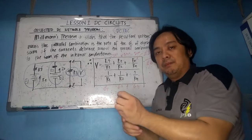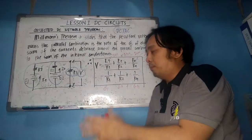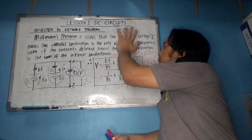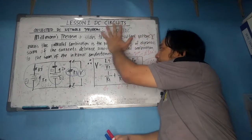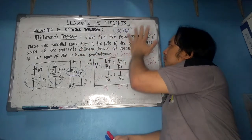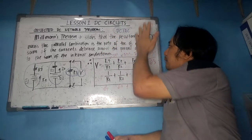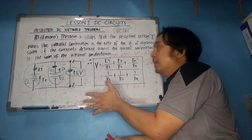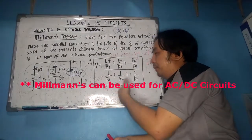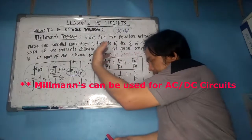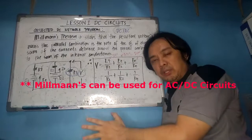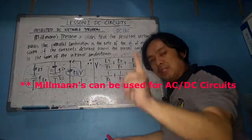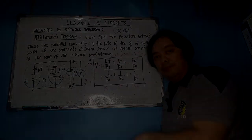This theorem applies to DC or AC circuits. For AC, R becomes R + jXL or R + jXC as long as each branch is already simplified to a series impedance and then connected in parallel. This is a very flexible formula that can be used for both DC and AC circuits.